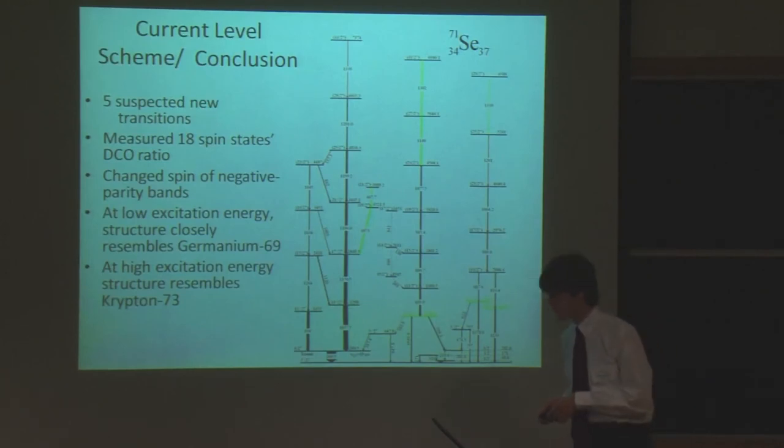So we've come up with a new spin structure for these two negative parity bands. In conclusion, we have five new transitions confirmed. We've measured 18 different DCO ratios. And we've changed these so the nucleus looks a lot like Germanium-69 at low excitation energies, and it looks more like the collective model with Selenium-73 at higher excitation energies. Thank you very much.